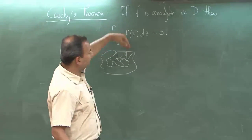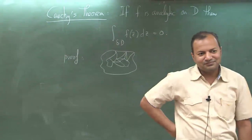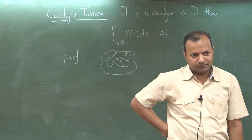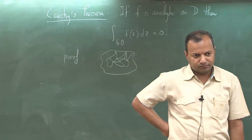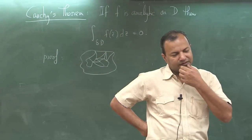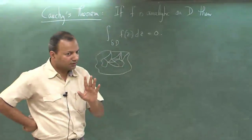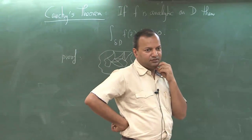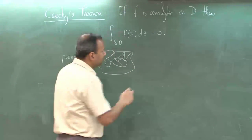Yes, f should extend smoothly to the boundary. I will prove it. Since you are asking about Cauchy's theorem, smoothness gives you continuity and automatically it will be analytic at points in the interior. But on the boundary it may not be analytic, because once you take analyticity at a point, then automatically in that domain it will extend to the boundary. So the boundary may not be analytic — no, that is right. Let us prove it carefully.